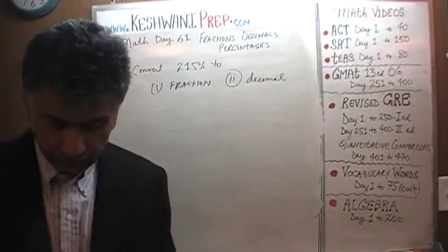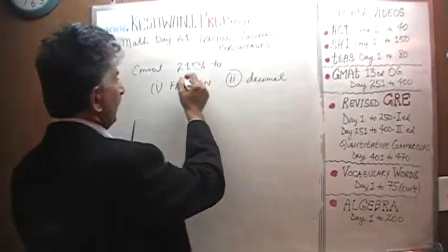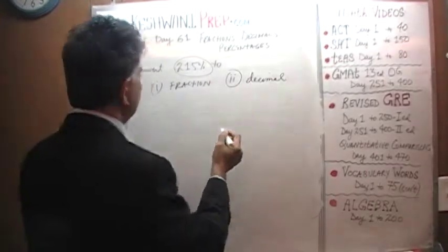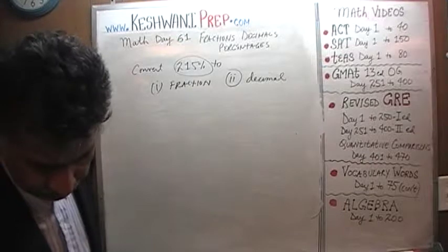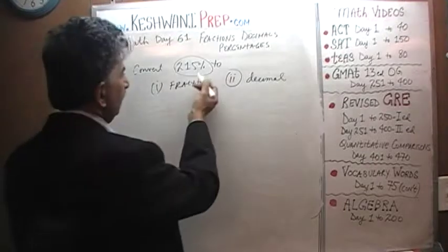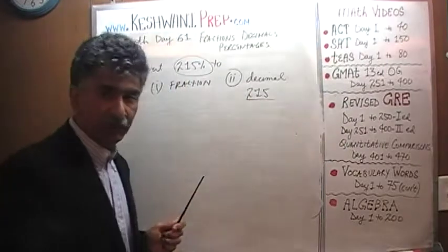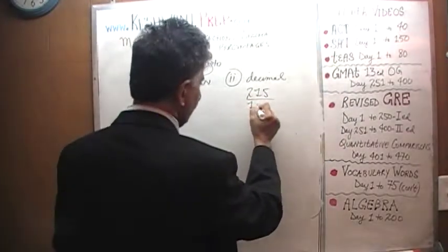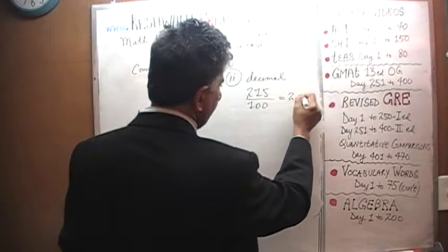215% converting into a decimal actually is a very straightforward deal. If you want to convert this into decimal, 215% means 215 out of 100. It's just 215 over 100 which is going to be 2.15.